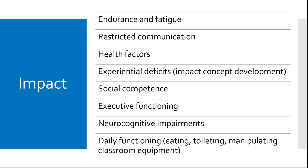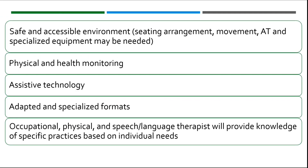All of those above is just a small list of ways that OI may affect our children's learning. As with other categories, there is a lot of crossover when it comes to evidence-based practices, and overall instructional practices will depend on the severity of the orthopedic impairment and learning level of the child. We look at safe and accessible environment, physical and health monitoring, assistive technology, adapted and specialized formats, and occupational, physical, and speech-language therapies, which will provide knowledge of specific practices based on individual needs.